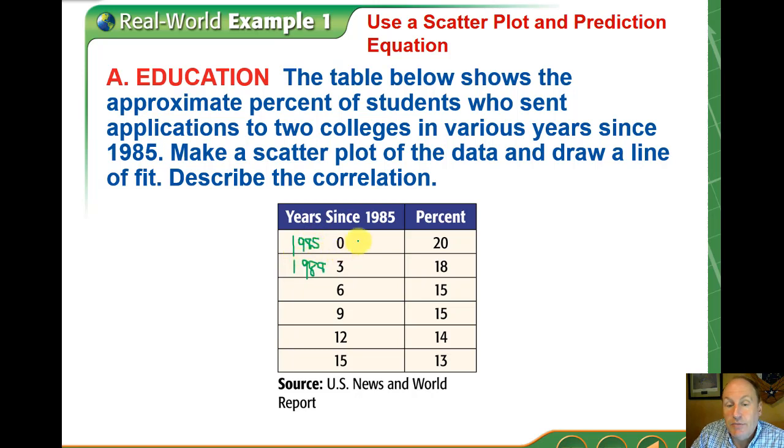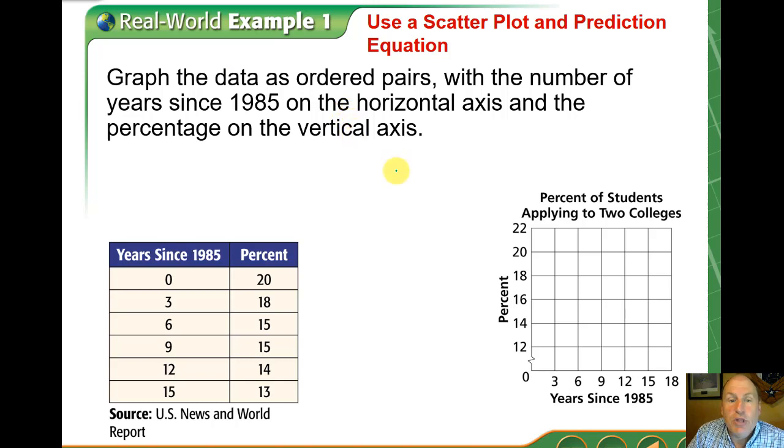1985 is the beginning year, the baseline year. Every other year after that is given by that year minus 1985. So the first thing you're going to do is actually create the scatter plot.